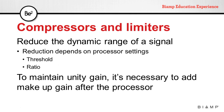From these processors, compressors and limiters need the most attention, as they reduce the dynamic range of a signal. This reduction depends on the threshold and ratio of the compressor or limiter. To maintain unity gain, it's necessary to add makeup gain after the processor.